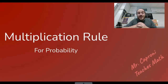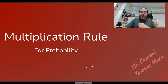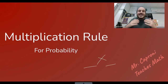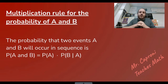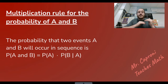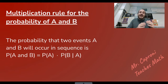That's what the multiplication rule covers. It should be no surprise that the multiplication rule tells us that if we have two events, we can multiply those two probabilities together to get the final probability. But it does get a little more complex than that. Here you can see the general form: the probability that two events A and B will occur in sequence is the probability of A times the probability of B given A.